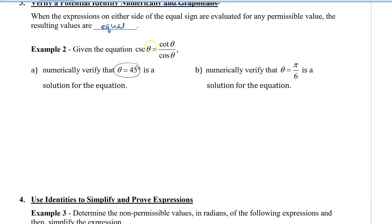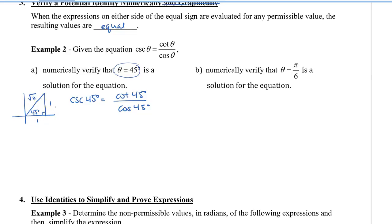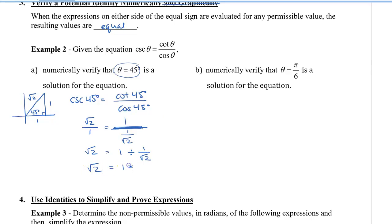We'll plug in 45° into both sides: cosecant 45° equals cotangent 45° divided by cos 45°. Using the special triangle 1, 1, root 2 for 45°: cosecant 45° is hypotenuse over opposite, which is root 2 over 1. Cotangent 45° is 1 over 1, which equals 1. Cos 45° is 1 divided by root 2. So the right side is 1 divided by (1 over root 2), which equals 1 times root 2 over 1 — root 2. Both sides equal root 2.